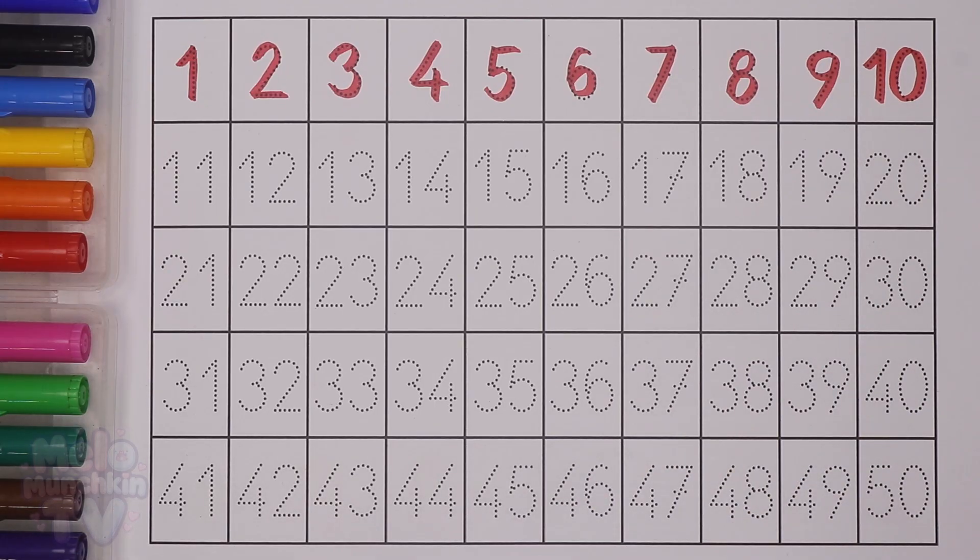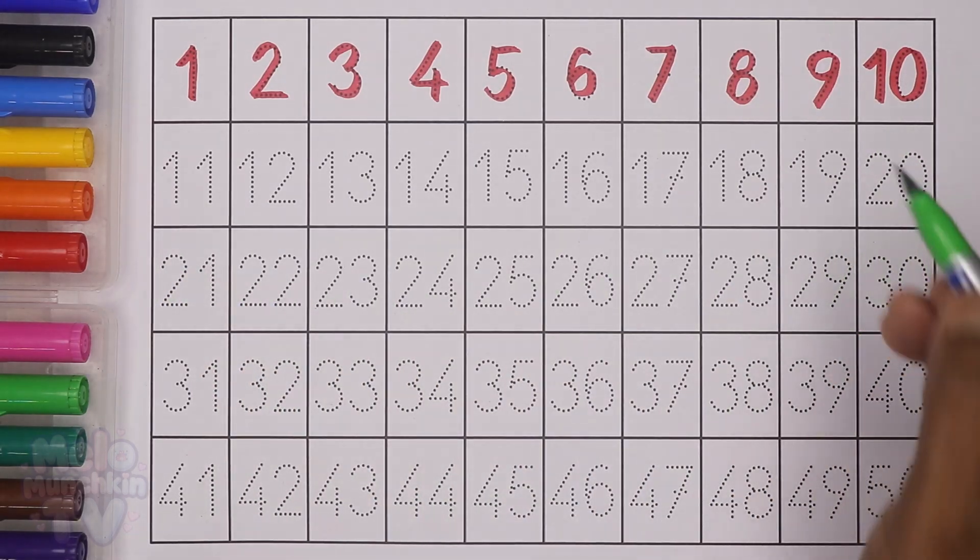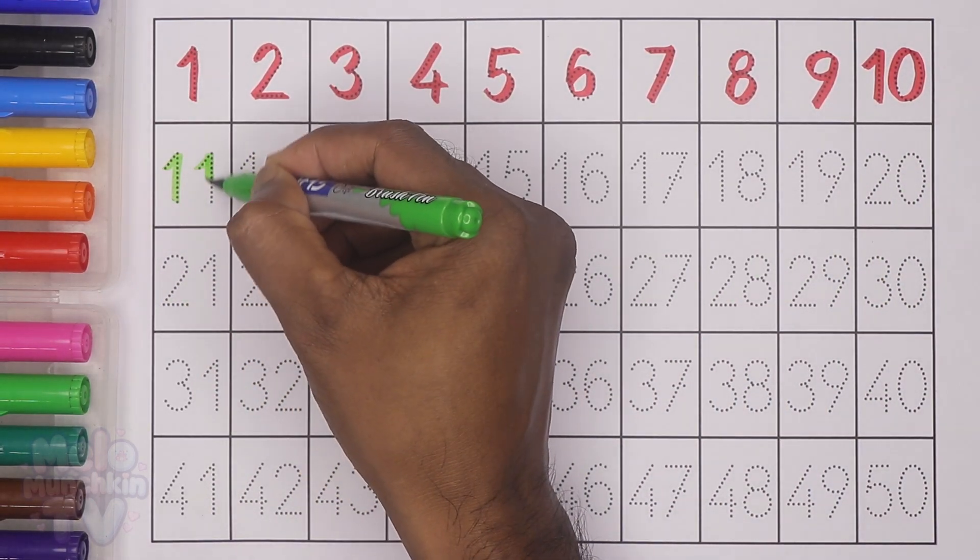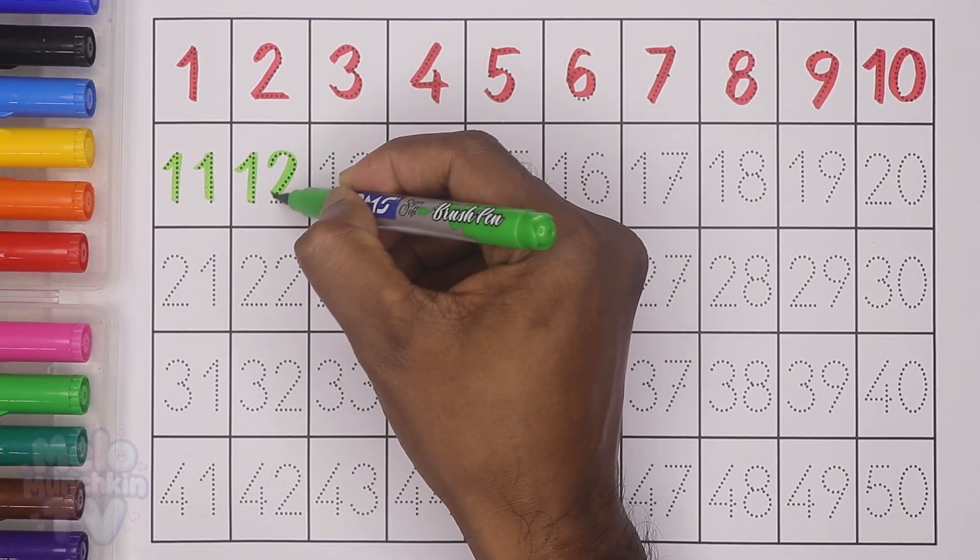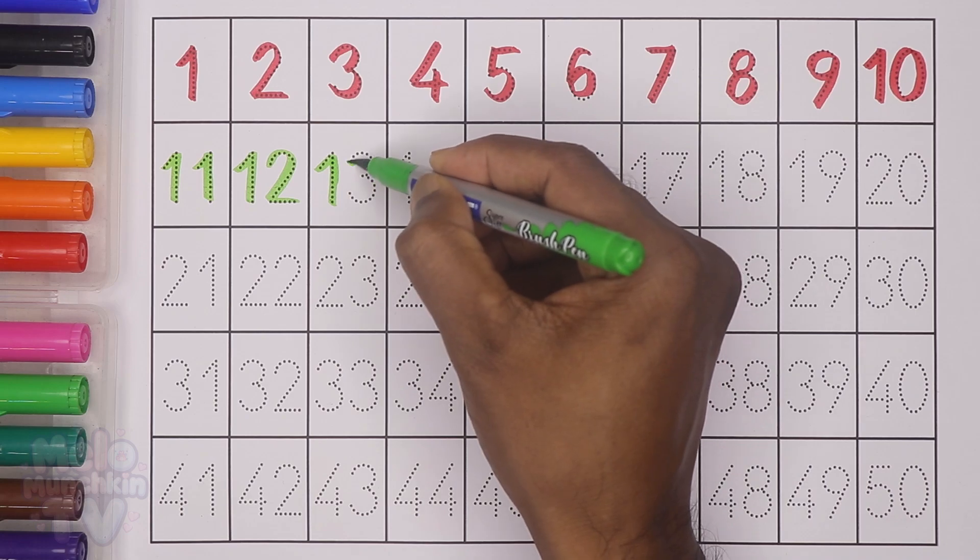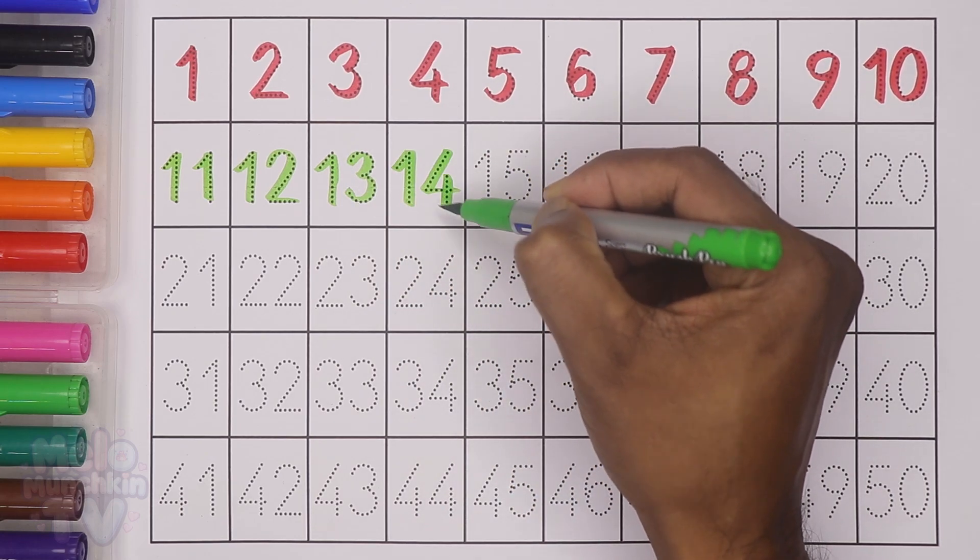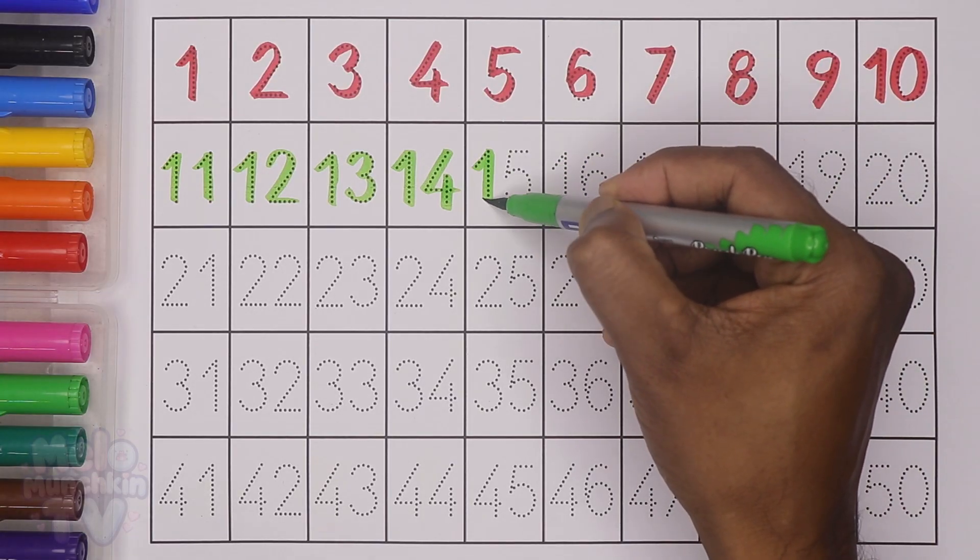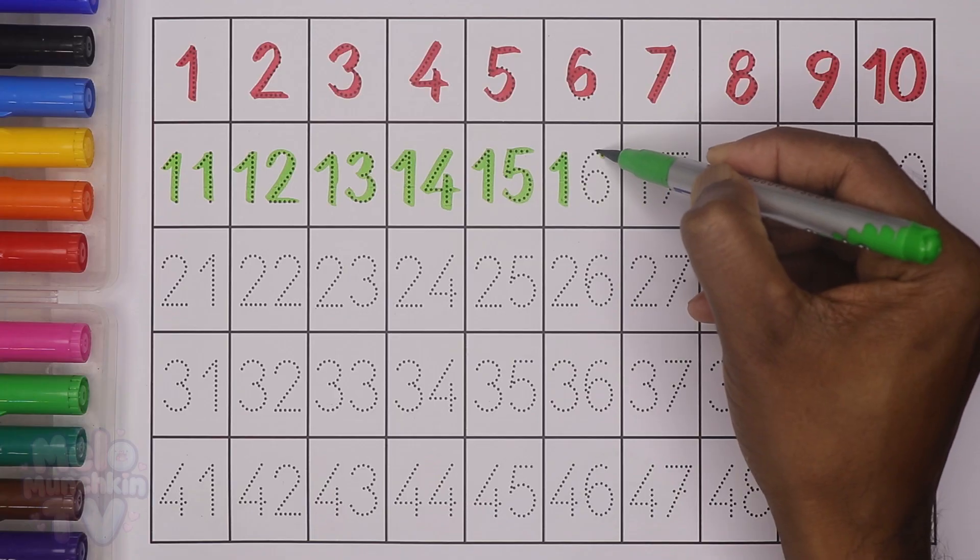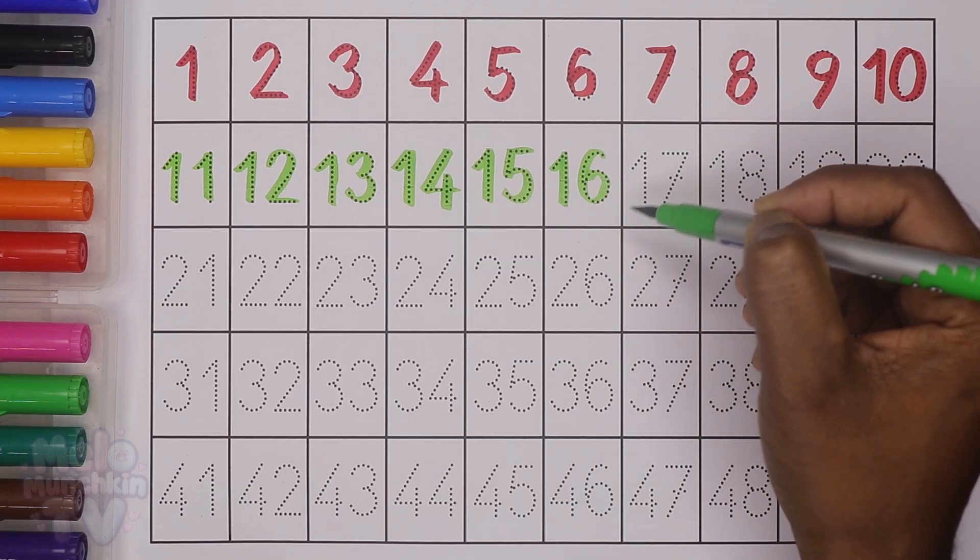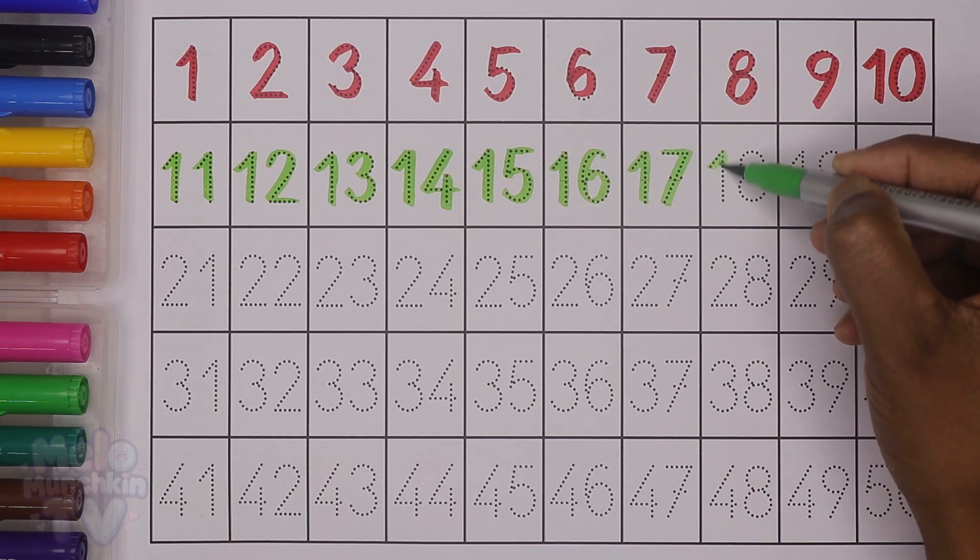Next I'll take green color and write the second line. After 10: 11 eleven, 12 twelve, 13 thirteen, 14 fourteen, 15 fifteen, 16 sixteen, 17 seventeen, 18 eighteen, 19 nineteen, 20 twenty.